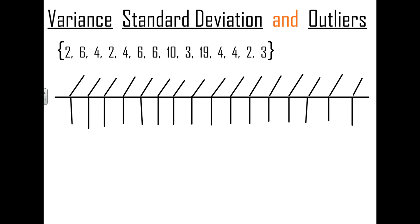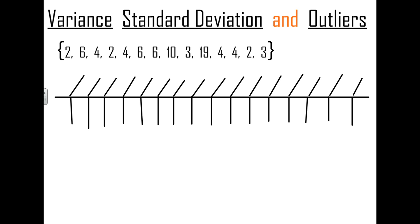There are going to be two numbers we need to calculate. X-bar is another way of saying the mean or the average. We're going to subtract each of these numbers from the mean, which is X-bar, and then we're going to take each one of those results and square it.